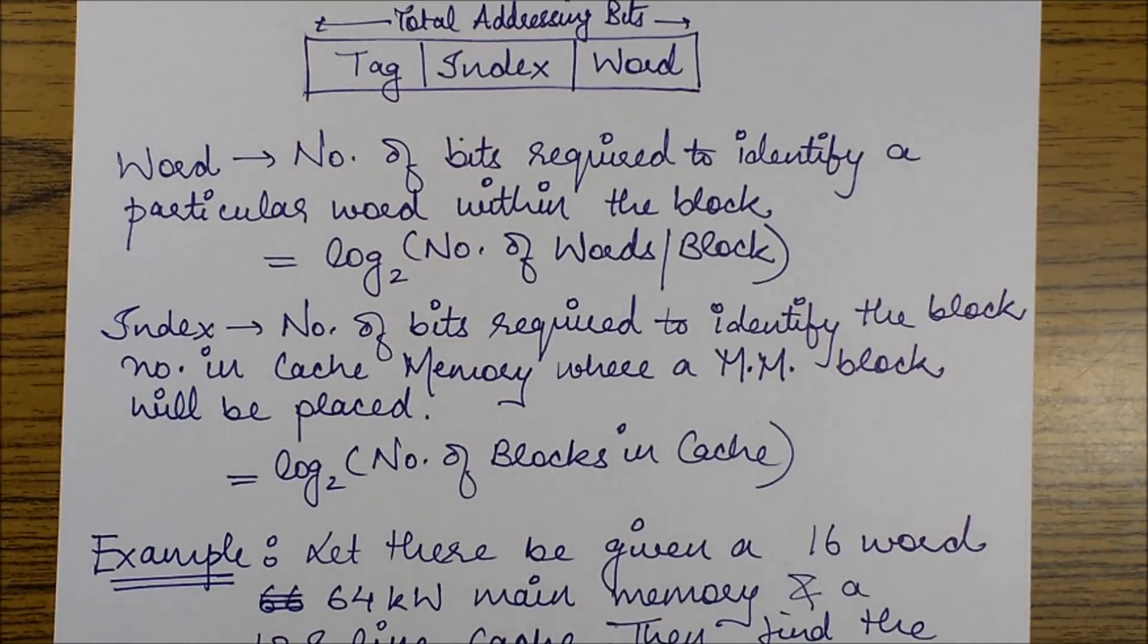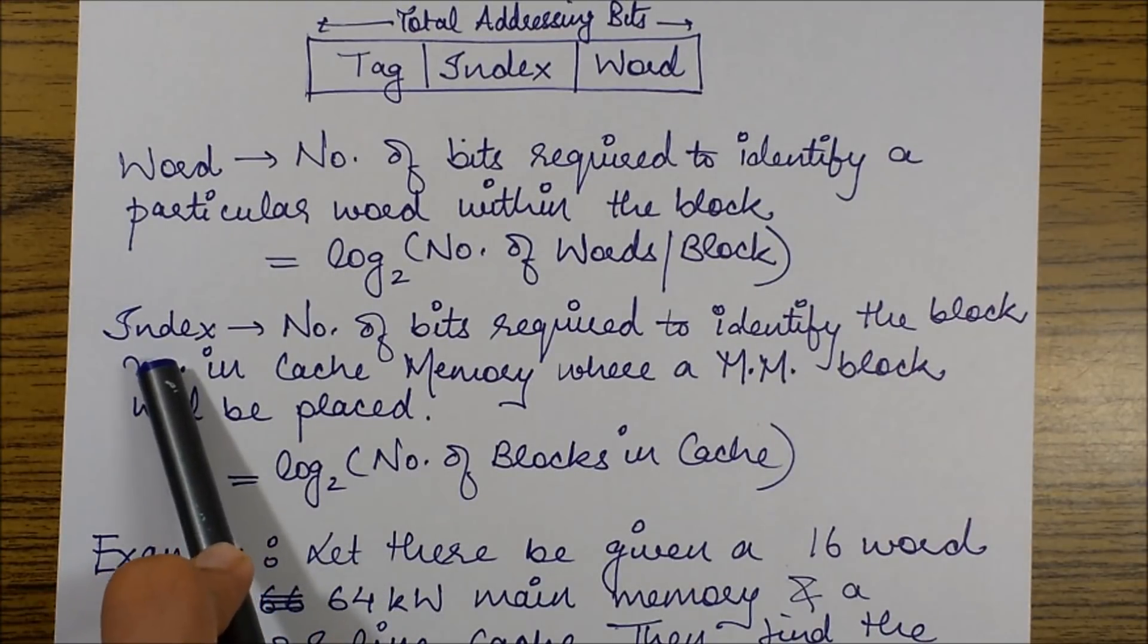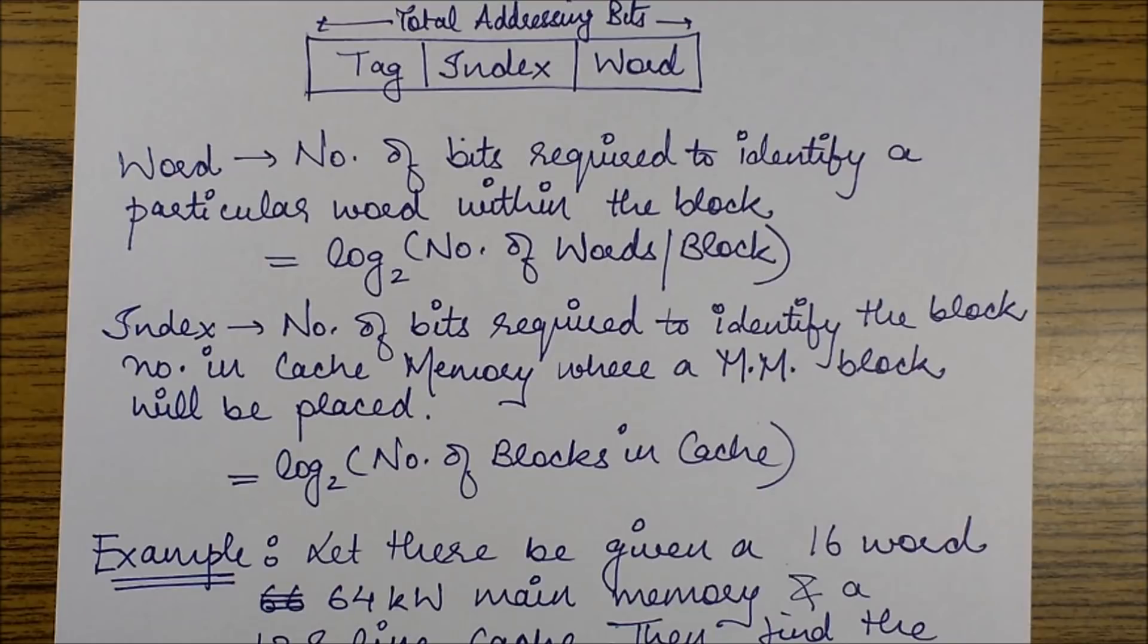This is the main idea of the word field. It is the total number of bits required to represent the size of a block when measured in terms of words. We'll see this with greater clarity with the help of an example.